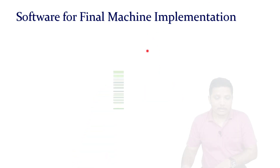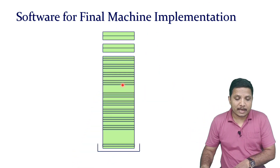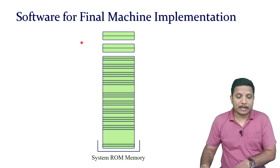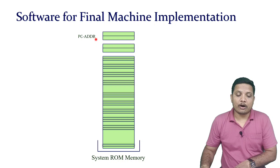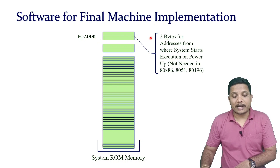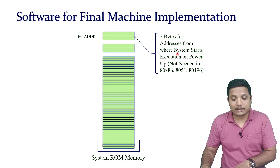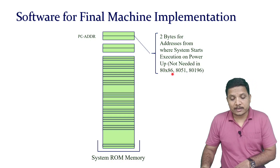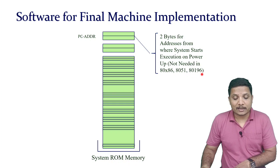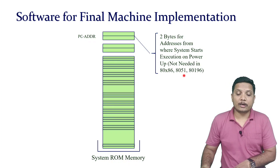Let us see it one by one. We have a ROM memory, and with this ROM memory, first we have a program counter address register — that indicates the address of the next instruction to be executed for a given program. We can have two bytes for addresses from where the system starts execution on power up. This is not required in the 8086 microprocessor, 80196 microprocessor, or the 8051 microcontroller.